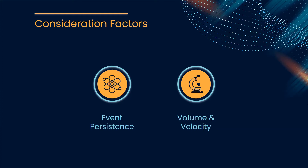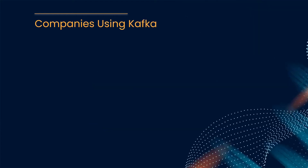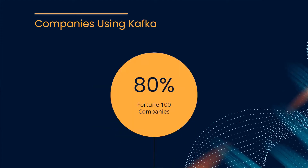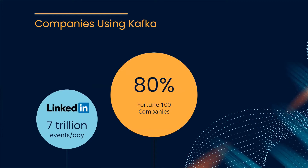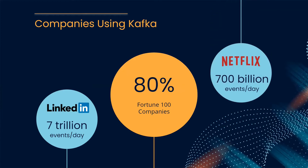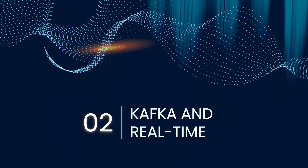Kafka is the golden standard when it comes to event streaming platforms. More than 80% of all Fortune 100 companies use Kafka. LinkedIn, where Kafka was created, processes over 7 trillion events per day. Netflix has also embraced Kafka for its events, messaging, and stream processing needs — they process over 700 billion events per day. Now I'll pass it on to Sophie to talk more about Kafka and its link to real-time.